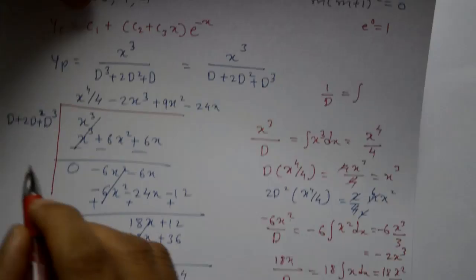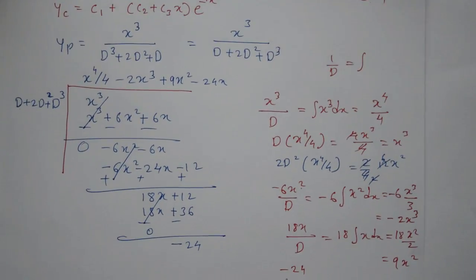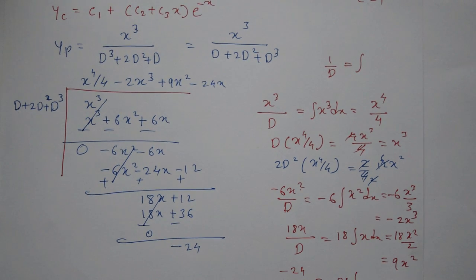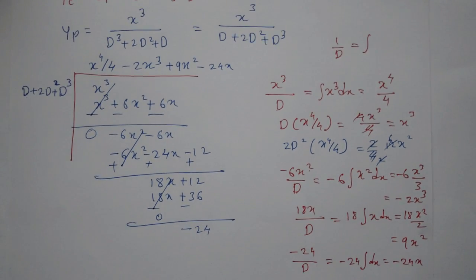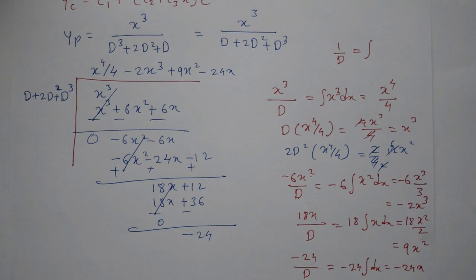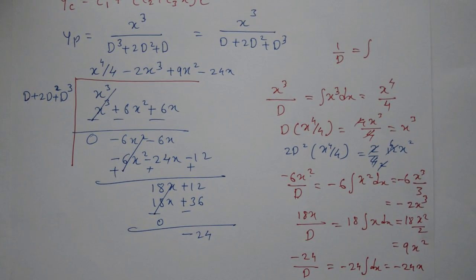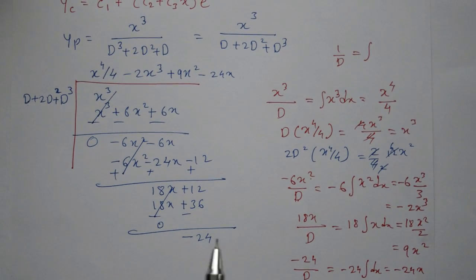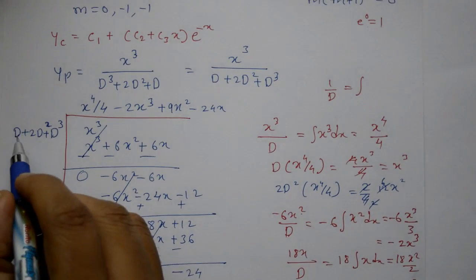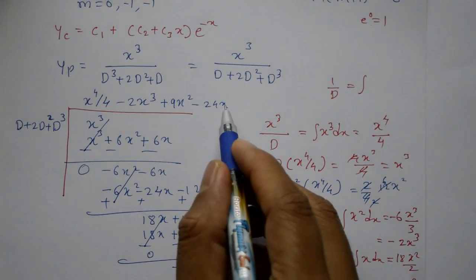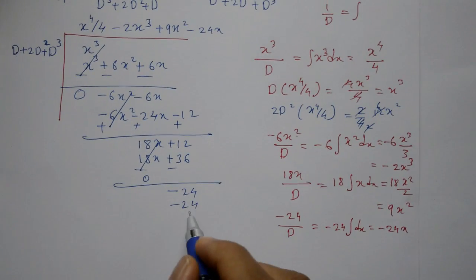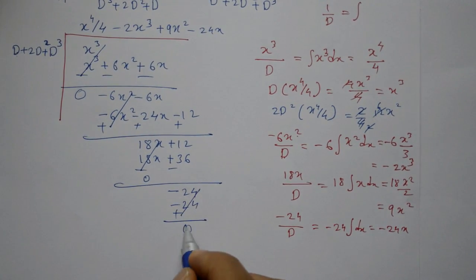Minus 24 divided by D: integrate -24 with respect to x gives -24x. Then D into -24x = -24, and changing sign gives difference of 0. The long division is complete.